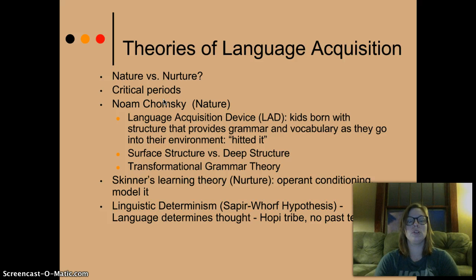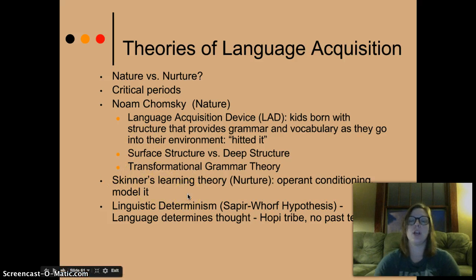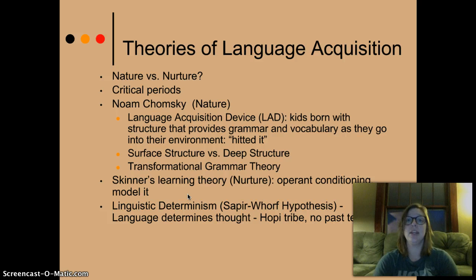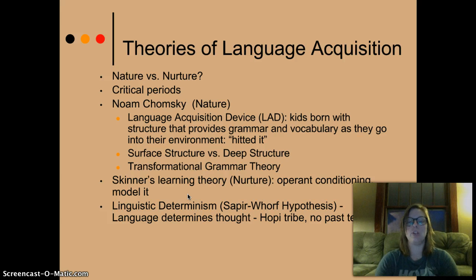Here are two theorists: Noam Chomsky and B.F. Skinner. Skinner is the behaviorist we know and love — he focuses on operant conditioning, the rewards approach. He argues that if you model it, the child will learn. So the child says something like 'hit it,' and you would say 'he hit it, he hit the bat.' Through that correction, the child will learn.